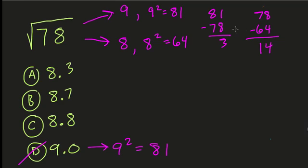So it's quite far from 8. So the decimal that represents the square root of 78 shouldn't be close to 8, it should be closer to 9. That means 8.3 is out as well. 8.3 is closer to 8 than 9, and we've already established by subtracting here that the square root of 78 should be closer to 9.